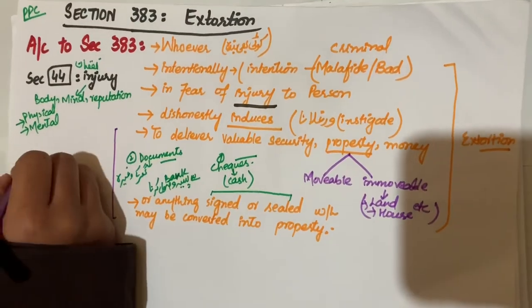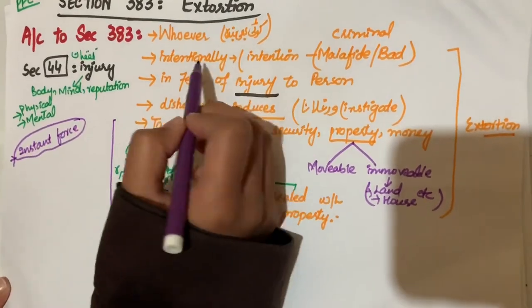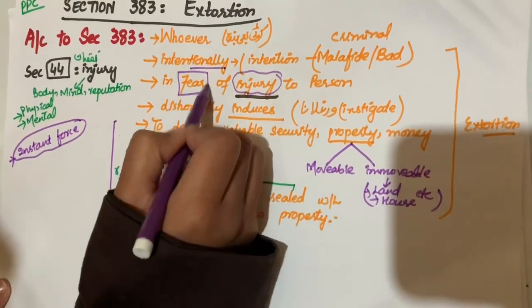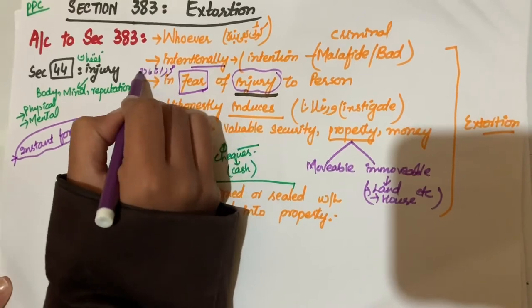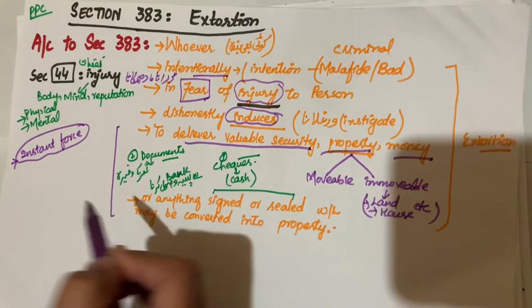For example, extortion mein yahan humare paas instant force use hoti hai. Us bande ko daraya jata hai instantly, intentionally usko injury cause ki jati hai, usko daraya jata hai, usko dhamkaya jata hai aur phir induce, usko instigate karke usse property, money ya valuable security deliver karwate hain.